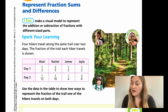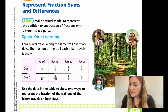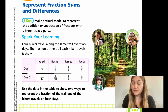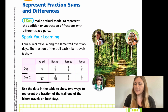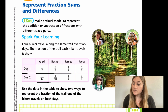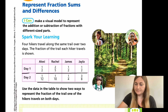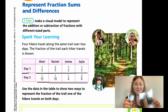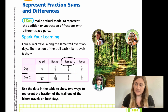It says four hikers travel along the same trail over two days. The fraction of the trail each hiker travels is shown. So here is Day 1 showing all of the different parts traveled: Alexi traveled half of the trail, Rachel did two-fifths of the trail, James did half the trail, and Jayla did half the trail. Then Day 2 shows they did a little bit less of the trail that was left. The problem says to use the data in the table to show two ways to represent the fractions of the trail one hiker traveled on both days. I'm going to choose James because he has the easier fractions.